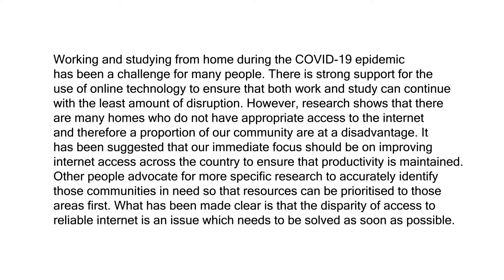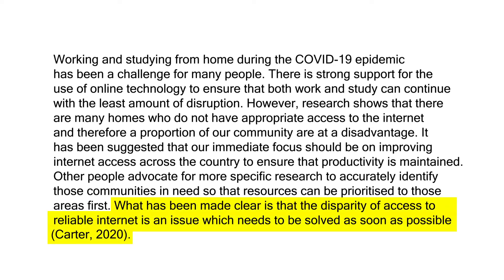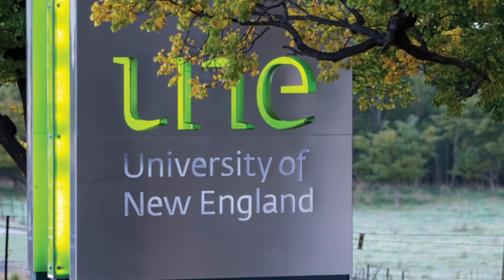The second most common mistake is that students reference only once right at the end of the paragraph. Again, it is impossible for the reader to know where the information comes from. The in-text reference at the end actually only belongs to the sentence it is a part of, which means that the final sentence only comes from the source Carter in 2020. This leaves the reader wondering: where does the evidence come from? What research has the author of the paragraph done? How can we verify the evidence and be sure that it is reputable?